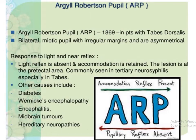Interpupillary muscle contraction causes constriction of the pupils. Argyll-Robertson pupil is a condition caused in neurosyphilis. In neurosyphilis, there is damage to the pretectal nucleus. As we have discussed, the light reflexes pass through the pretectal nucleus, and as a result, the light reflex is absent in Argyll-Robertson pupil. Since the accommodation reflex does not pass through the pretectal nucleus, the accommodation reflex is present in patients with Argyll-Robertson pupil.